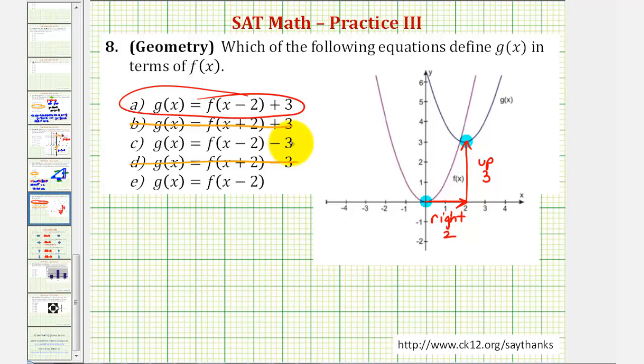Notice how for c, the minus three on the end would shift the graph down three units, and e, there's no vertical shift.